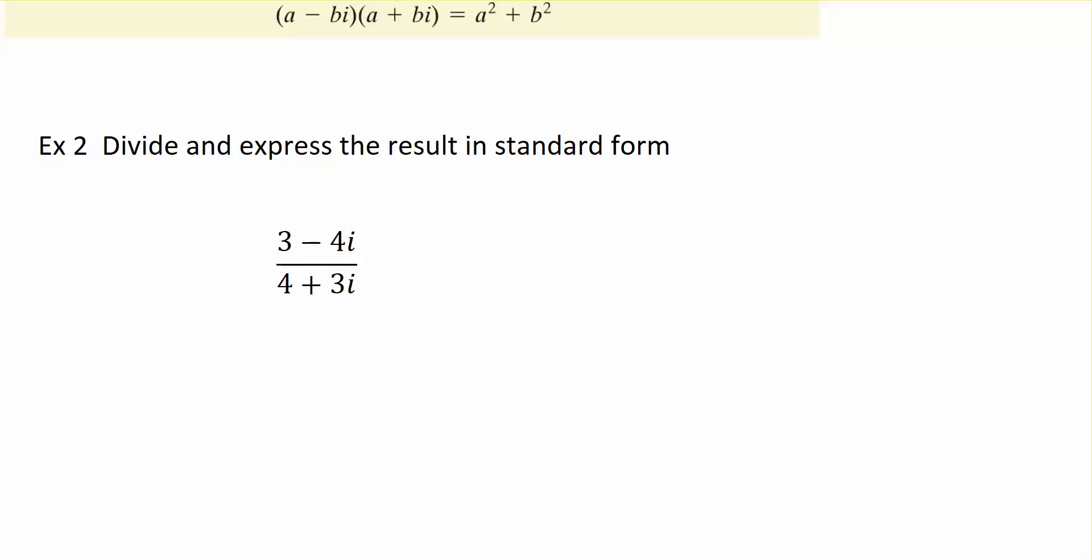And so the conjugate that I'm interested in is the denominator's conjugate, because that's the position, or that's the place where I don't want to have any imaginary numbers. So, we are going to multiply top and bottom by the conjugate of the denominator. So the conjugate would be 4 minus 3i, and I multiply the numerator by 4 minus 3i, because that's the same thing as multiplying by 1.